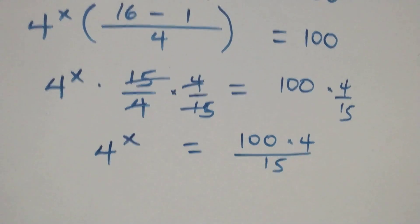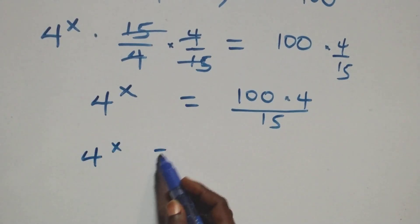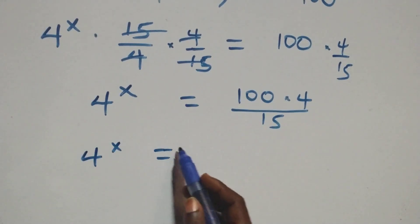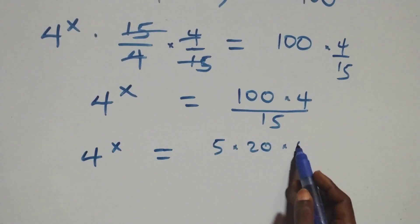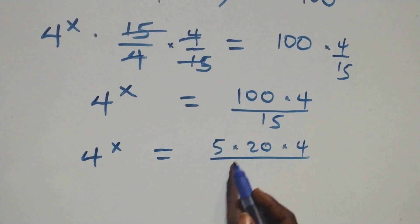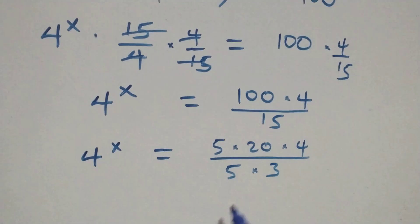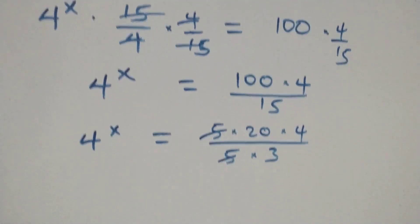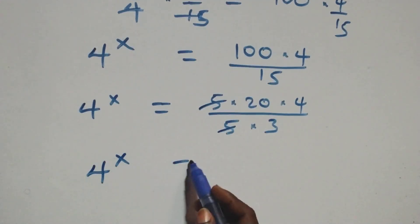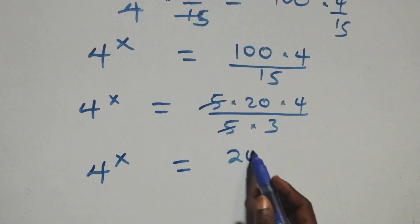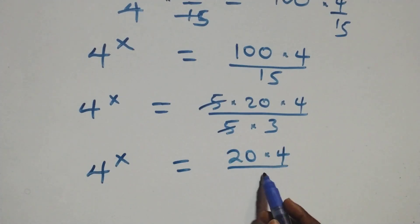And this becomes 4 raised to power x equals to — here we can write 100 as 5 times 20, then times 4 over 15. Here 5 cancels each other, and then we have 4 raised to power x equals to 20 times 4 over 3.